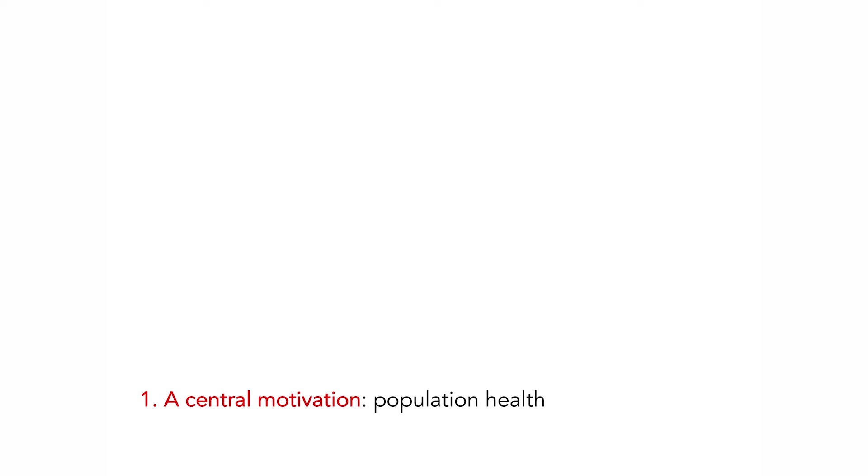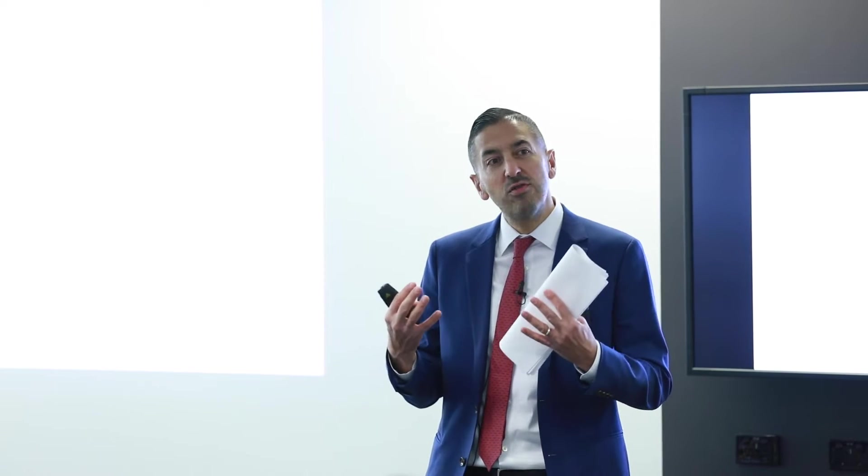Let me start with why we do what we do. One challenge whenever talking about systems — which is implicitly a method, an approach — is that many of us drawn to population health science are, let's face it, geeks. We barrel quickly down into the method and forget what we're doing. It's important to ground ourselves in what we're doing, because that influences how we apply a systems science lens. Ultimately, we're interested in the health of populations.